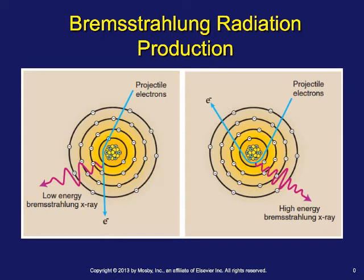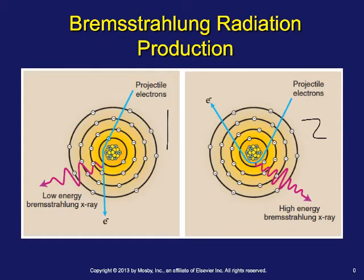If we have a fairly low trajectory change — it doesn't bend all that much — the energy produced is a low energy Bremsstrahlung x-ray. If there's a huge change of direction, we get a high energy Bremsstrahlung x-ray. Bremsstrahlung is just a German word for stopping. This is a particulate interaction between electrons and tungsten atoms that happens within the x-ray tube.